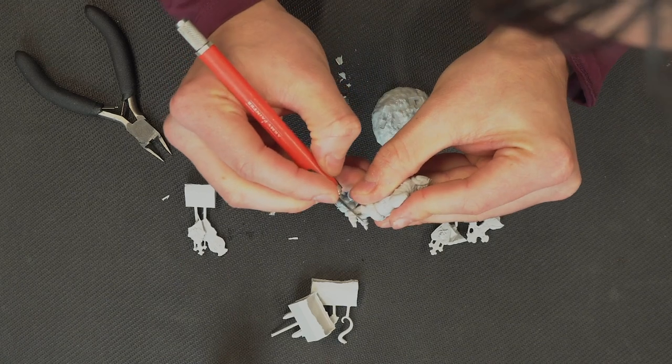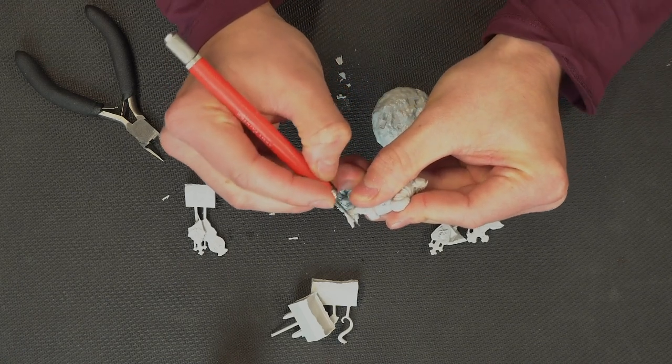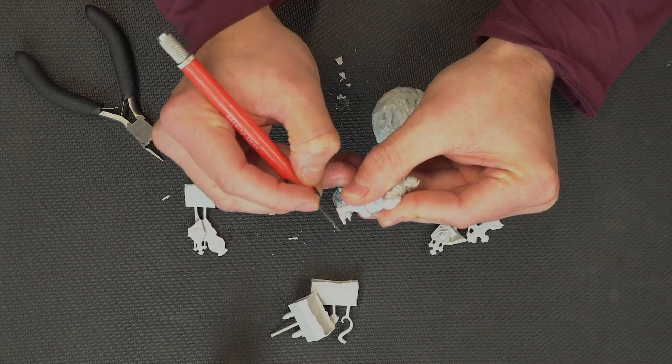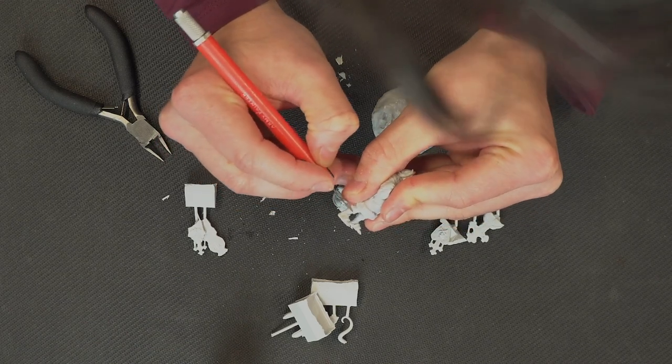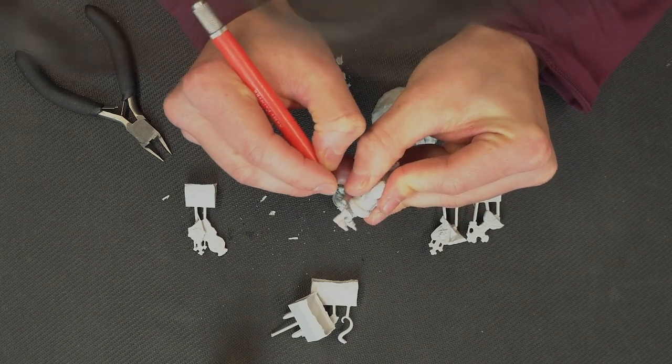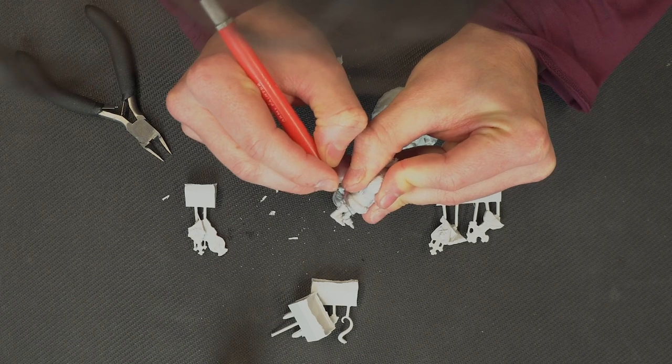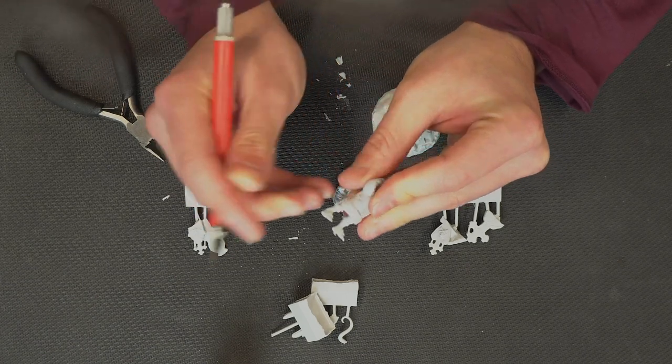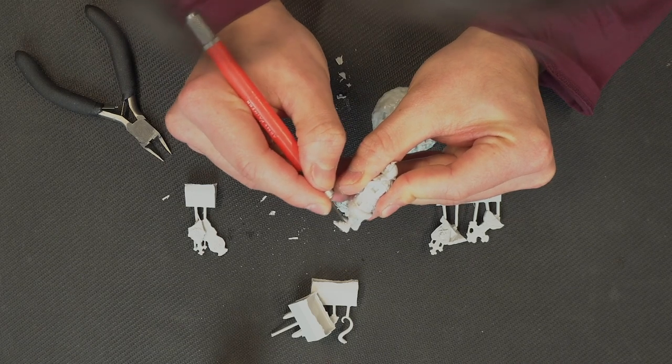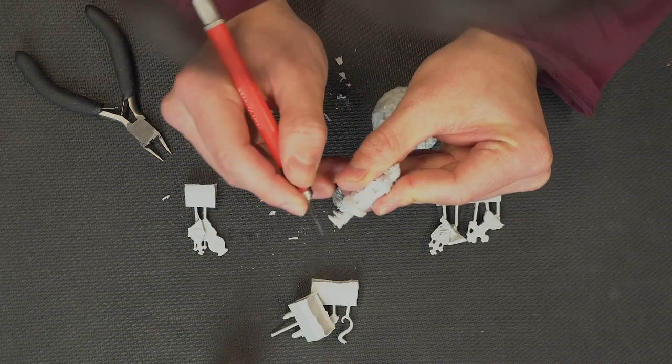As you will get these mold lines where the two halves of the silicone mold come together, you will get a slight line. So what you need to do is just gently scrape the surface, and this is going to cut off that mold line. You can actually get tools that can do this for you, but I'm just using the edge of a sharp blade. Just be very careful not to press too hard, otherwise you'll start damaging the model.